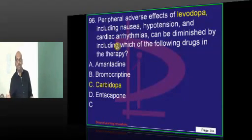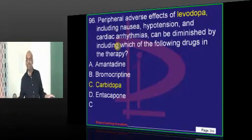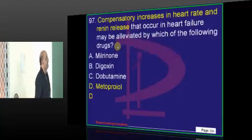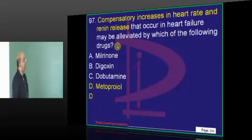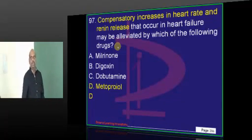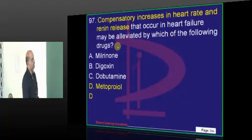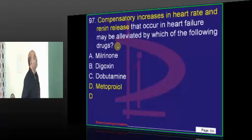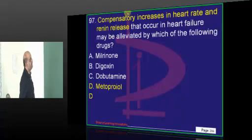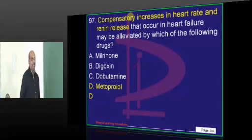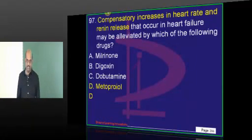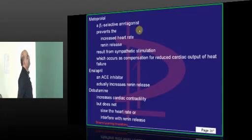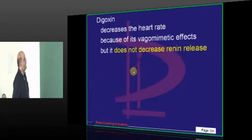Now, levodopa — you don't want peripheral side effects, so add carbidopa. That is considerably the best way to treat Parkinson's. Metoprolol is a wonderful drug you can give to control that compensatory rise in heart rate which occurs in congestive heart failure patients. Metoprolol is a beta-1 selective antagonist.